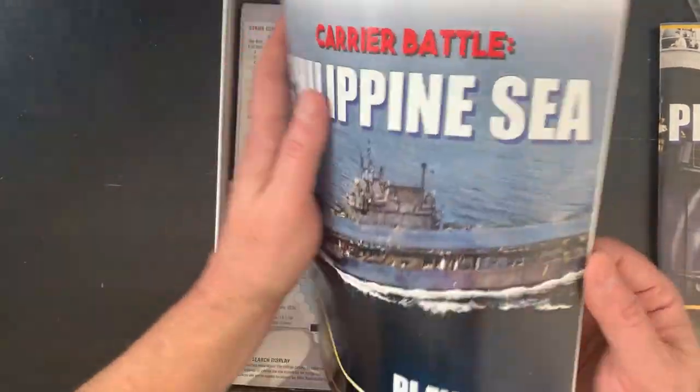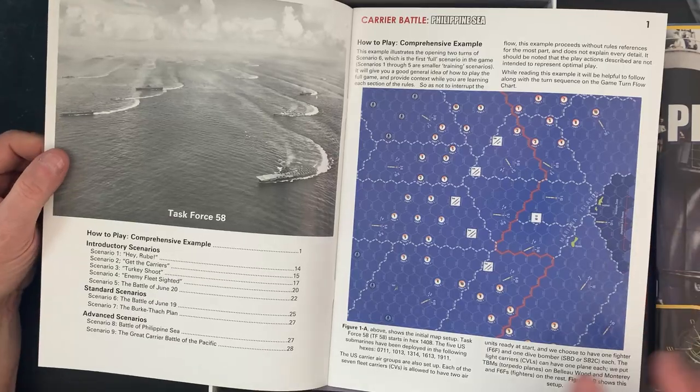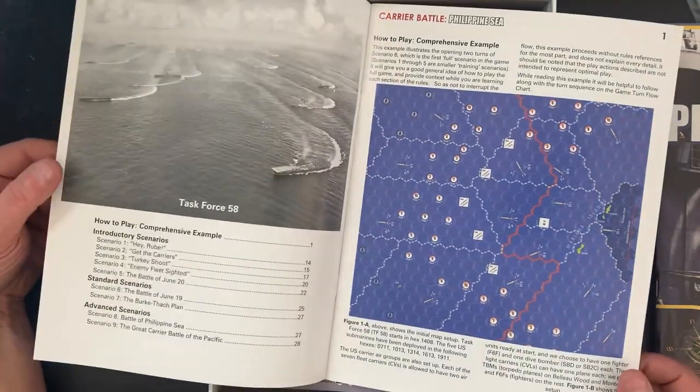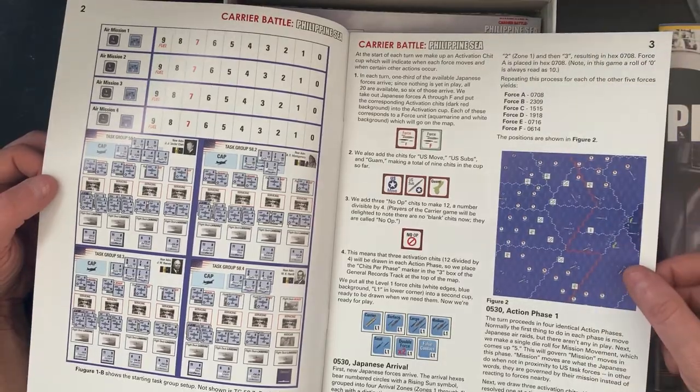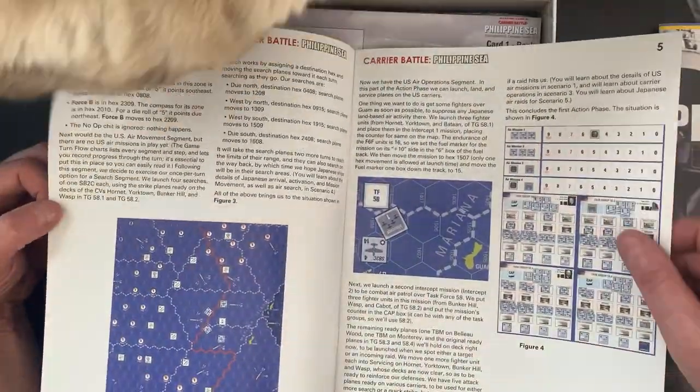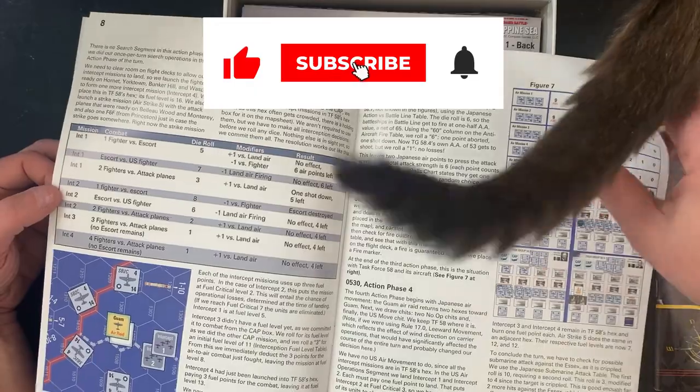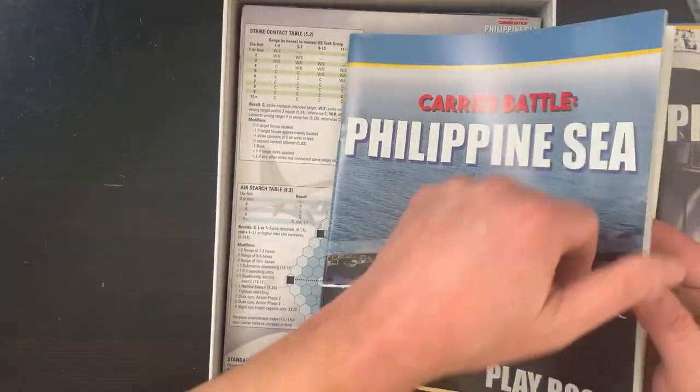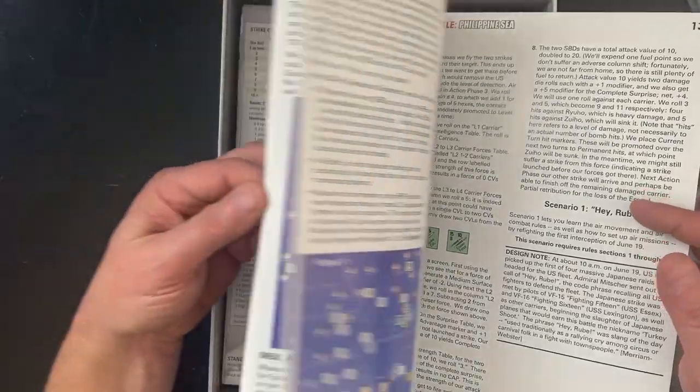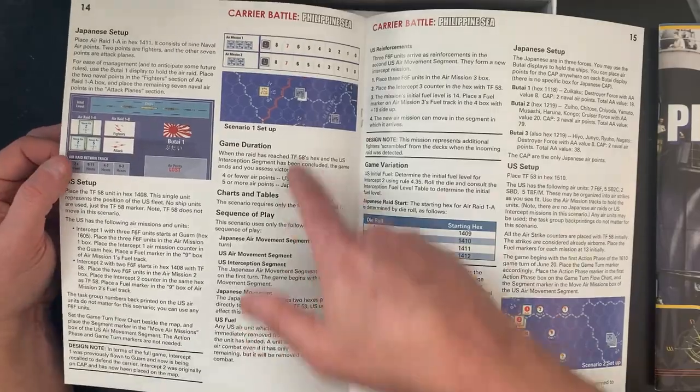Here's our playbook. These are obviously the scenarios. Very nice, already liking this. Great photos. How to play, comprehensive example. Is this the scenario or is this still the comprehensive example? Here we go, scenario one. So in the playbook, the first 12 pages are a very comprehensive example of how to play. I really like that.